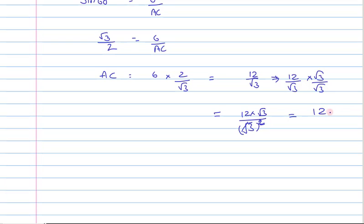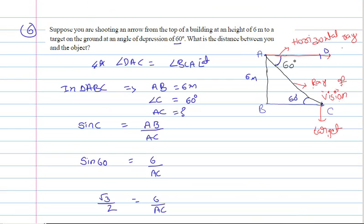This can be written as 12 root 3 over 3, which equals 4 root 3. The distance between point A and point C is 4 root 3 meters. That means the target is 4 root 3 meters away from you.